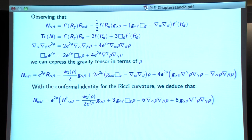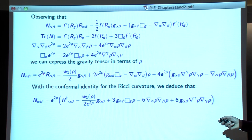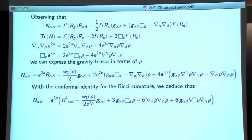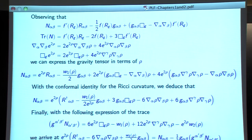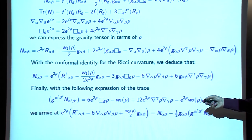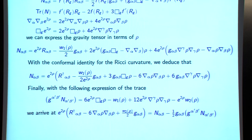Now use the conformal identity for the Ricci curvature stated earlier. By doing that, you realize you can collect some of these terms — especially the Ricci curvature and the variation. These two parts are actually giving you the Ricci curvature of the DAG metric: this term plus that variation gives you this, plus some lower order terms. The last step is to express N_αβ by removing the trace on both sides.